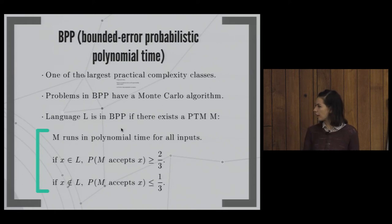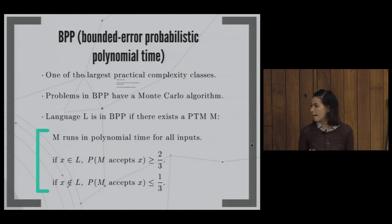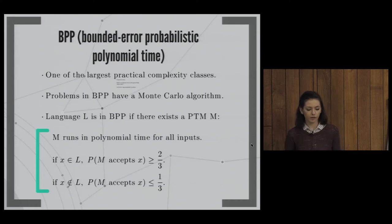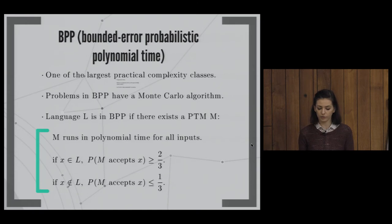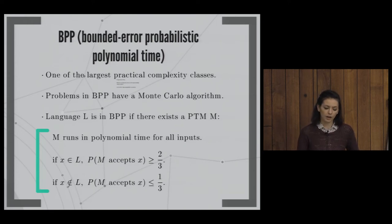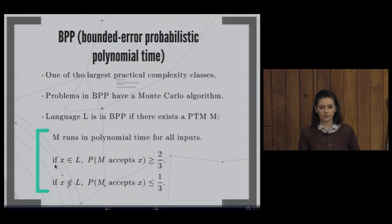Here is the formal definition of BPP. For a membership problem, a machine in BPP accepts an input x with probability greater than 2/3 if x is in the language L, and rejects with probability greater than 2/3 if x is not in L. Notice that errors are possible in both the yes and no directions — this is the two-sided error version.